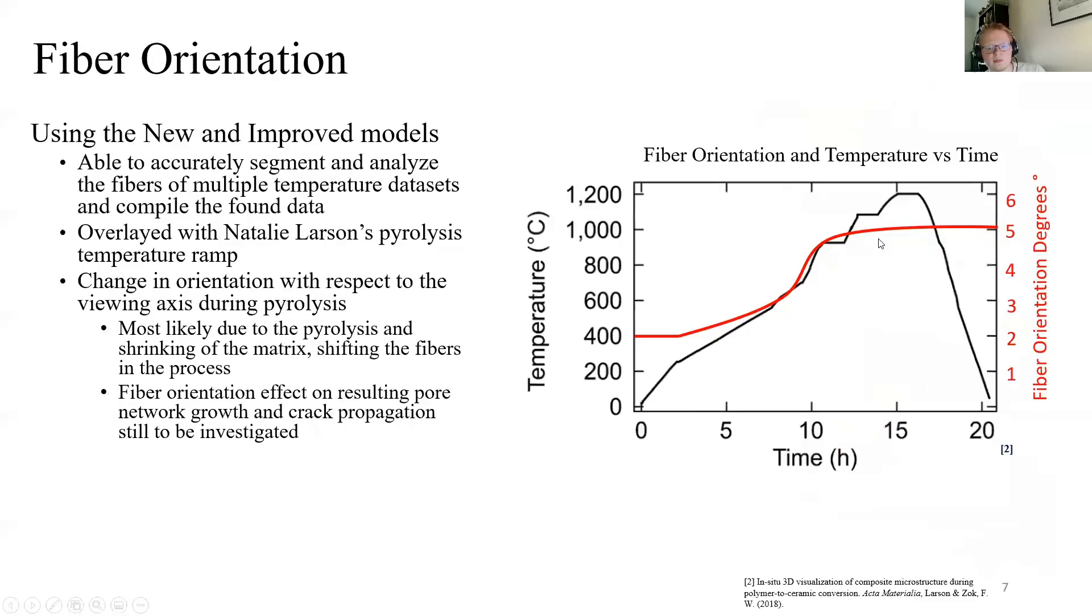Using the new models to segment fibers over the datasets, we were able to analyze and compile the found data to show that a gradual shift in fiber orientation in relationship to the viewing axis occurs over the pyrolysis process. Seen on the right here, overlaid with Larson's reported temperature scale during her pyrolysis process. We found the shift is most likely due to the shrinking of the matrix and the effects on pore growth and crack propagation in reference to our previous work resulting from the shift of fiber orientation is still left to be investigated once we have additional time.